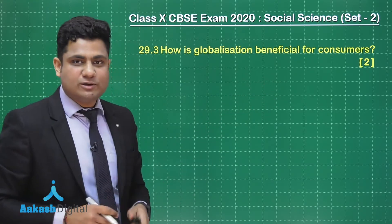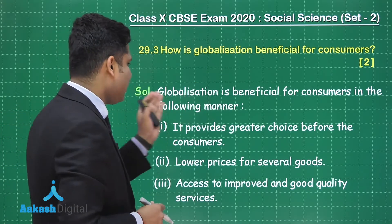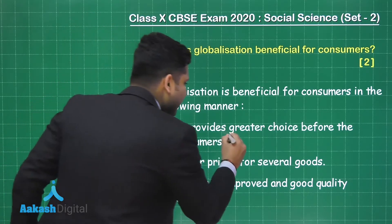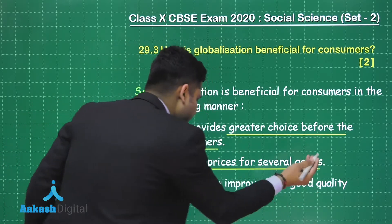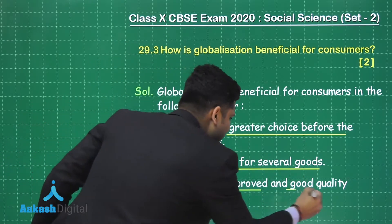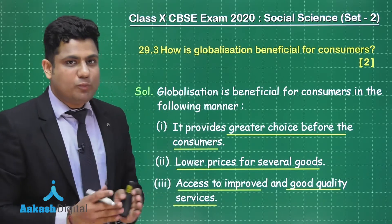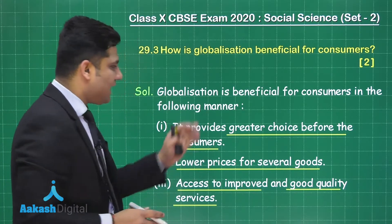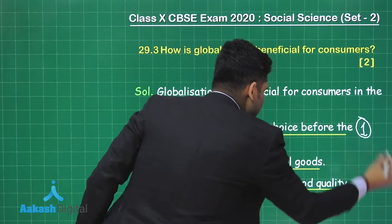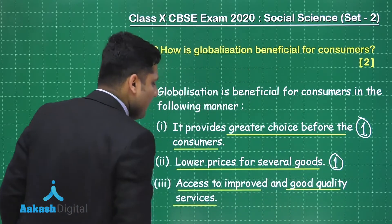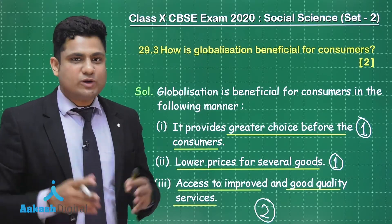You need to write two points for this question. Globalization is beneficial for consumers in the following manner. First, it provides greater choice before the consumers. Second, lower prices for several goods and access to improved and good quality services. Here we have three points but you can write any two. If you have written in this manner, you are going to get one mark for the first point and the other for either of them, totaling two marks for this question.